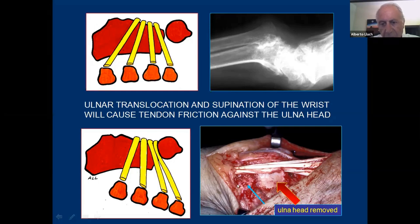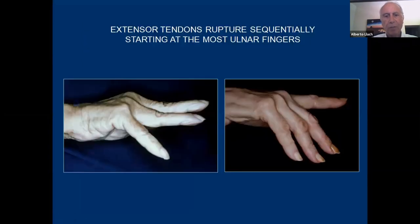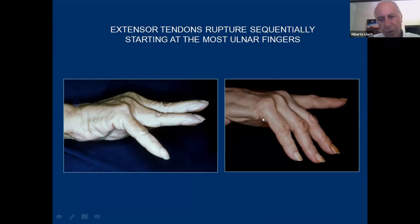Here we have the ulnar head removed — this is the proximal stem of the distal ulna. We can see the extensor tendon rubbing against the osteophytes on the glenoid surface of the radius. The ulnar head has been removed, and this will be the cause of tendon rupture. That's why the tendon rupture always sequentially goes from ulnar to radial side.